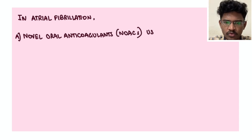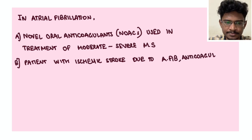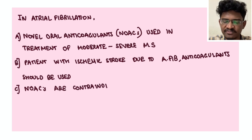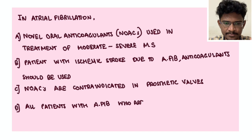Option A: Novel oral anticoagulants (NOACs) are given in moderate to severe mitral stenosis. Option B: Anticoagulants should be given in patients who develop stroke due to atrial fibrillation. Option C: NOACs are contraindicated with patients with prosthetic valves.